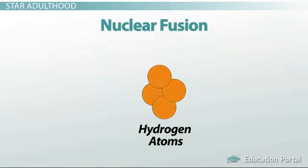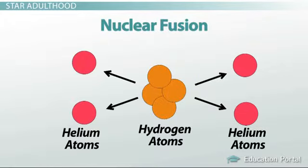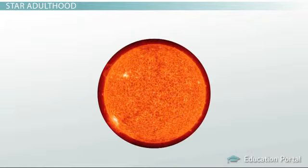Nuclear fusion is when hydrogen atoms fuse and produce helium atoms. This reaction releases energy. This energy pushes outward on the star. So while the weight of the star pushes in towards the core, energy produced by the nuclear fusion in the core pushes outward.